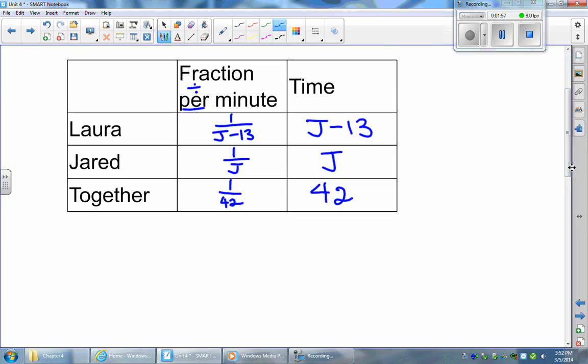Now we can set it up and say that the amount Laura can get done in one minute plus the amount Jared can get done in one minute should be equal to the amount that they both together can get done in one minute.